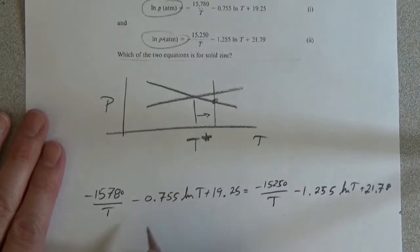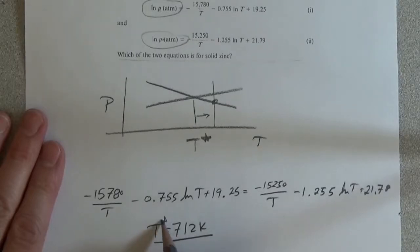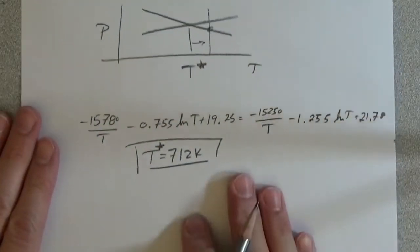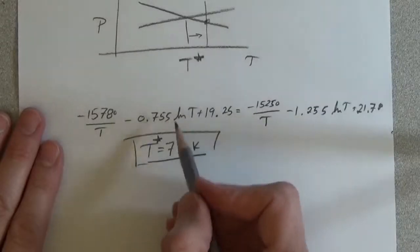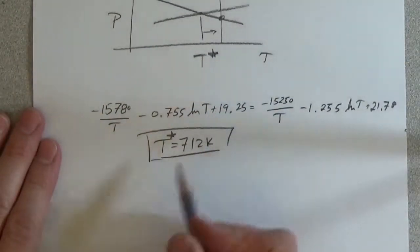And solving, we get T equals 712K. We're going to call it T star. Great. So that is the point where the two are equal. Let's go slightly above that.